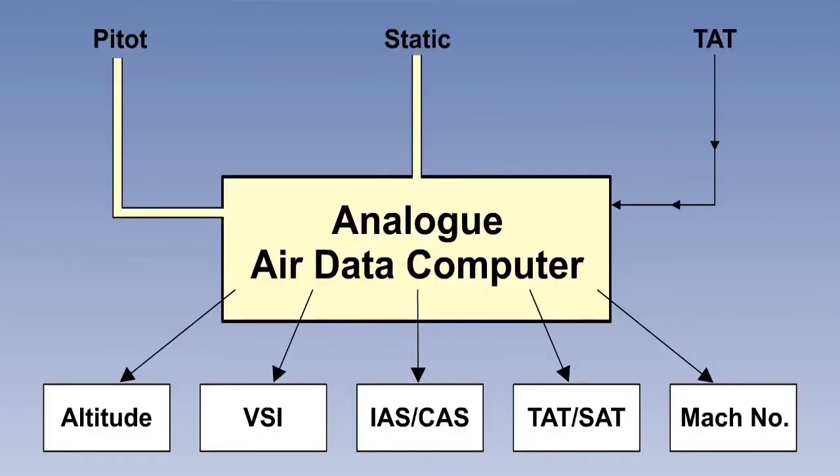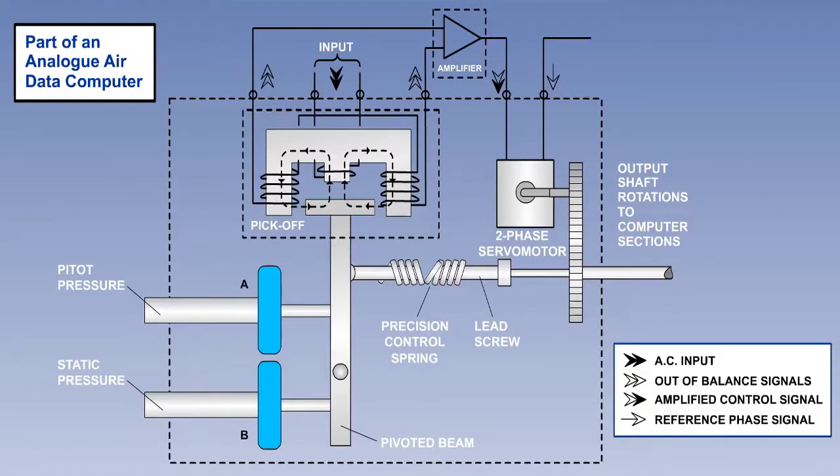In the earliest air data computers, pitot and static pressures were passed directly down tubes from the pitot head and the static vents. This is the airspeed part of an analogue air data computer. Pitot and static are passed directly to two pressure capsules. The capsules are attached to an I-bar, which is pivoted.